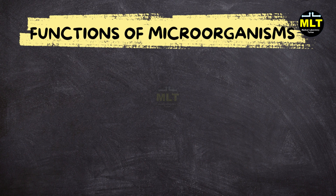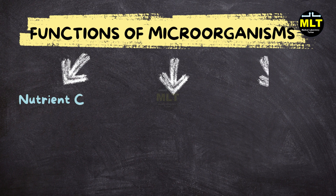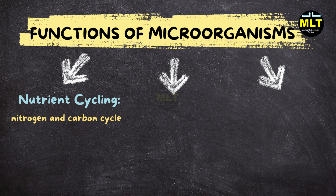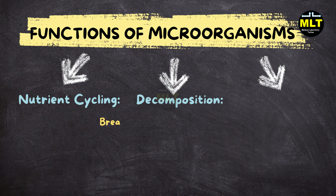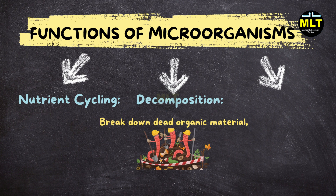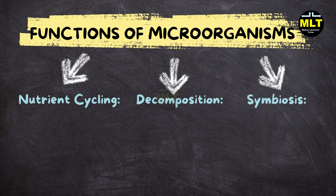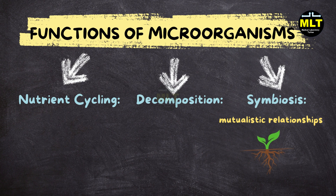Functions of microorganisms. Microorganisms perform vital functions in ecosystems including nutrient cycling — microbes play a critical role in the nitrogen and carbon cycles. Nitrogen-fixing bacteria convert atmospheric nitrogen into forms usable by plants, while decomposers break down organic matter, releasing nutrients back into the soil. Decomposition: microorganisms break down dead organic material, returning essential nutrients to the environment and maintaining soil health. Symbiosis: many microorganisms engage in mutualistic relationships, such as nitrogen-fixing bacteria in the roots of legumes, which enhance plant growth while receiving carbohydrates in return.